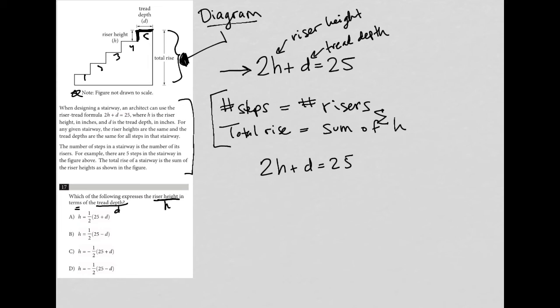So I want to isolate H. I'm going to subtract D from both sides here. So I have 2H equals 25 minus D. Now I'm going to divide by 2. So I have H equals 25 minus D all over 2.